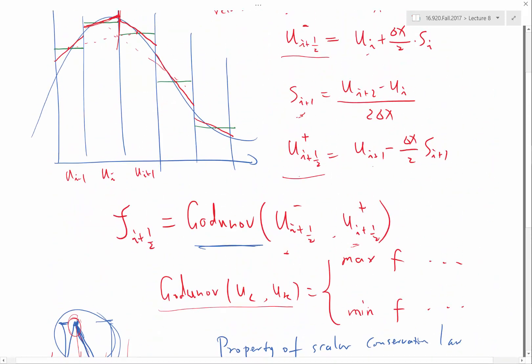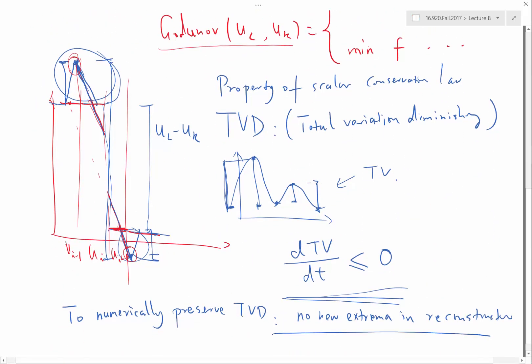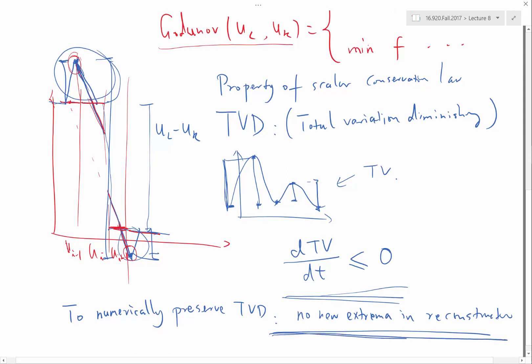who figured out the scheme for solving, for doing this proper way of reconstruction, actually proved the theorem saying that there is no simple way to achieve this total variation diminishing property and maintain second-order accuracy.